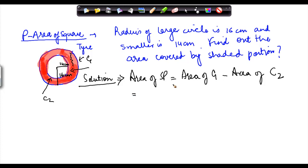What is the area of circle 1? Area of circle as we know is equal to pi r square minus, let's say we have r1 is equal to 16 and r2 is equal to 14, pi r square, r2 square.